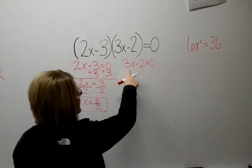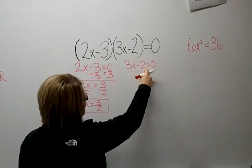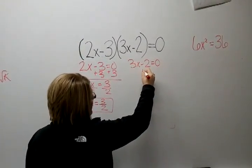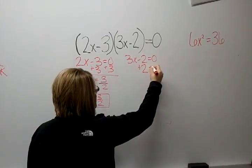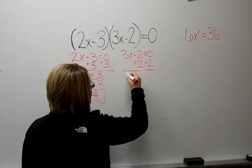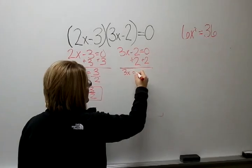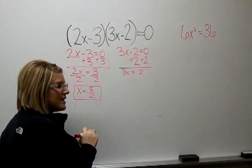And then now we have to go back to this side and solve for x. So we're going to add 2 to both sides, bring down the 3x. So we have 3x equals 2. We want to get x by itself.